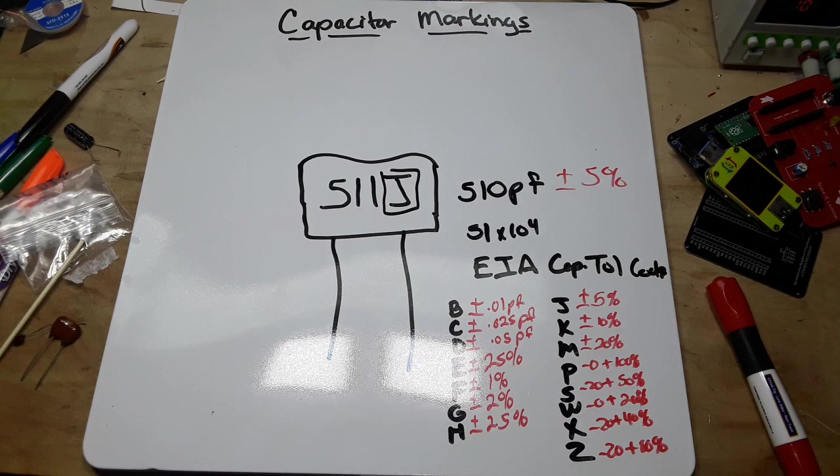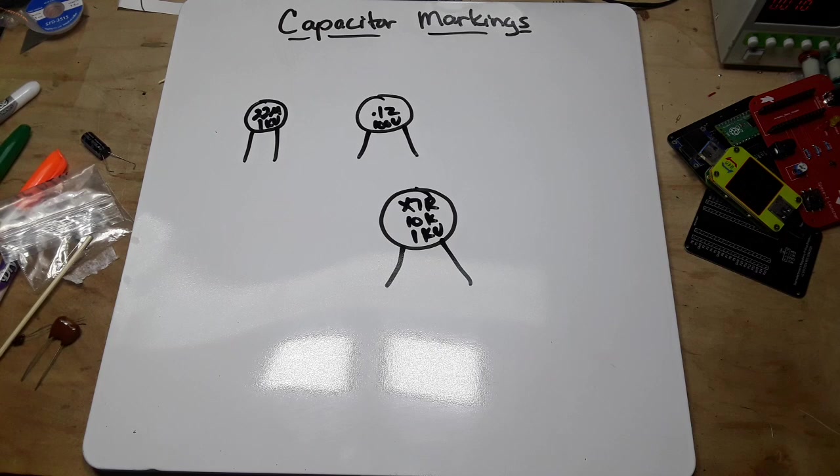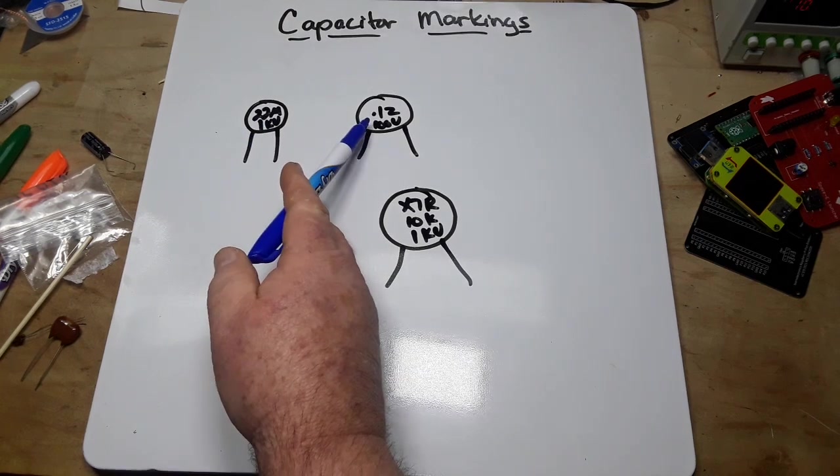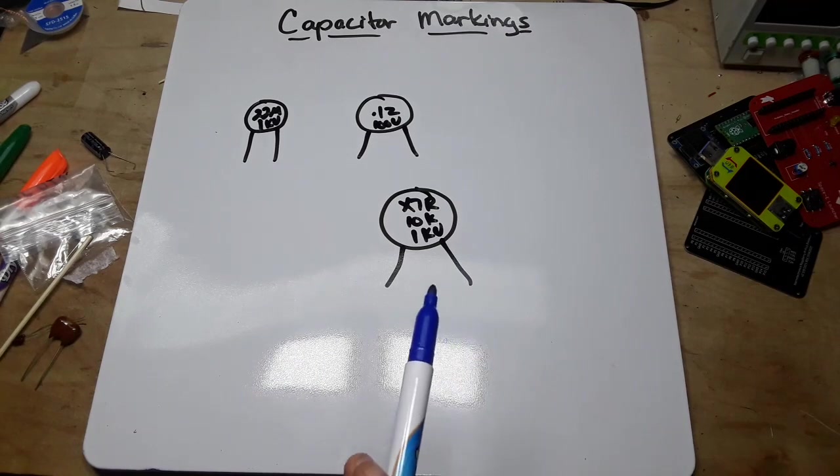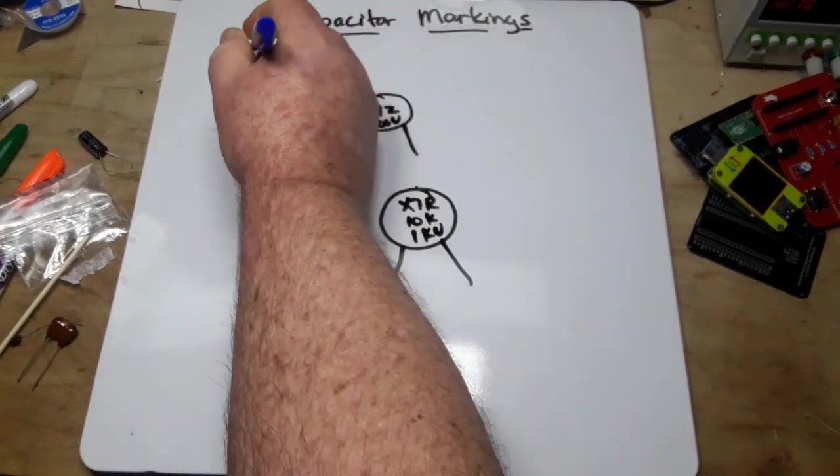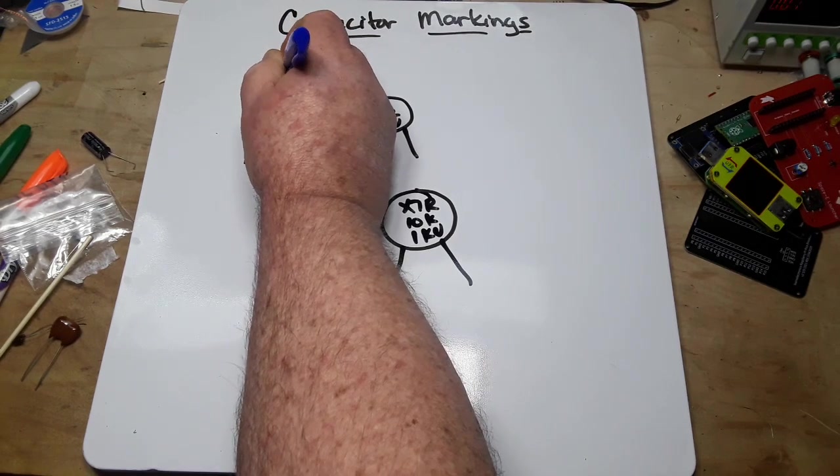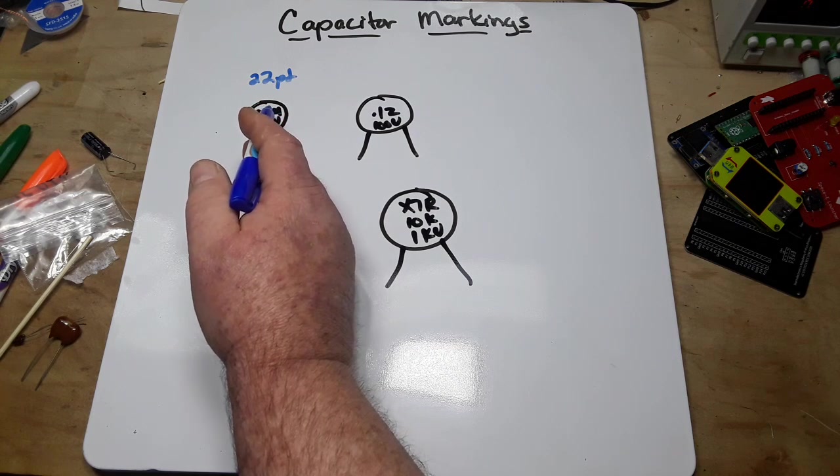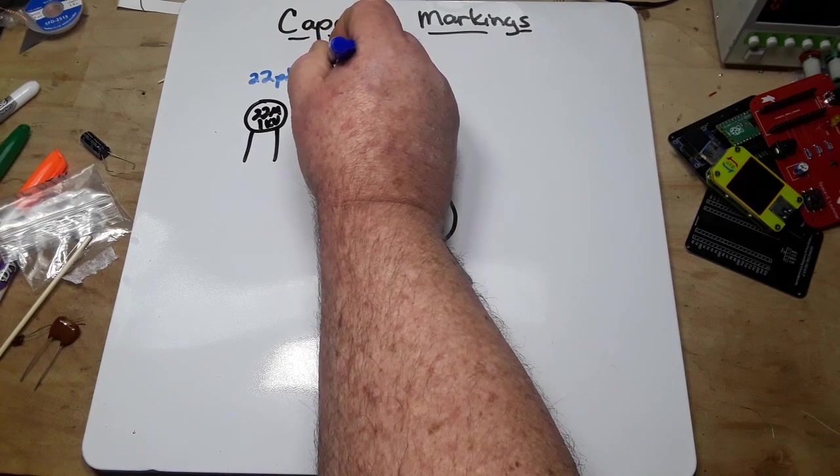Now let's talk about another type. So here we have our larger high voltage ceramic disc capacitors, and the markings can really vary. Like you see here: 22M, 0.1Z, X7R, 10K, 1KV. So what does all this mean? Well, this one here would be 22 picofarad. Then we have M which is our code, and that tells us it is plus or minus 20%.